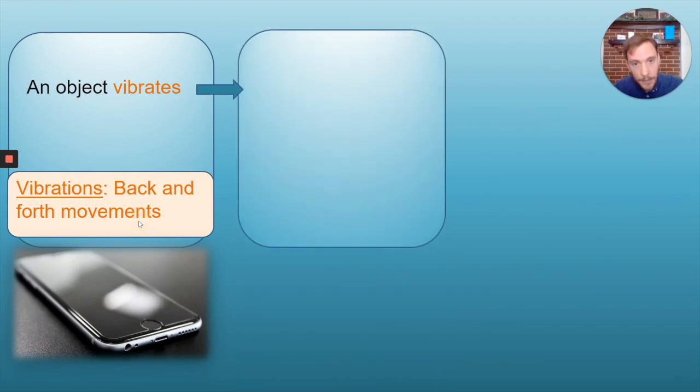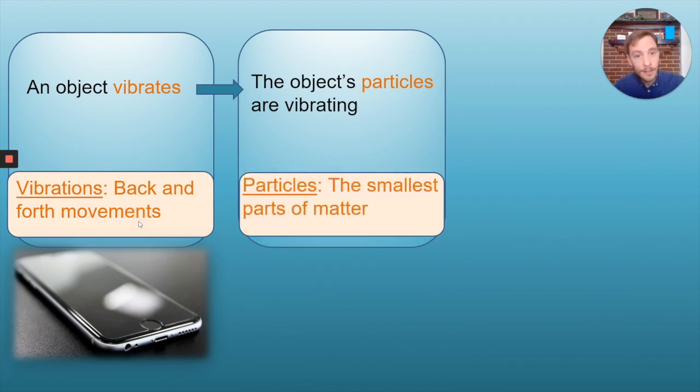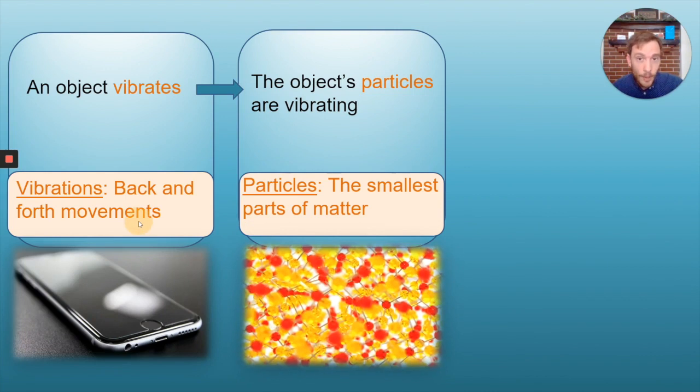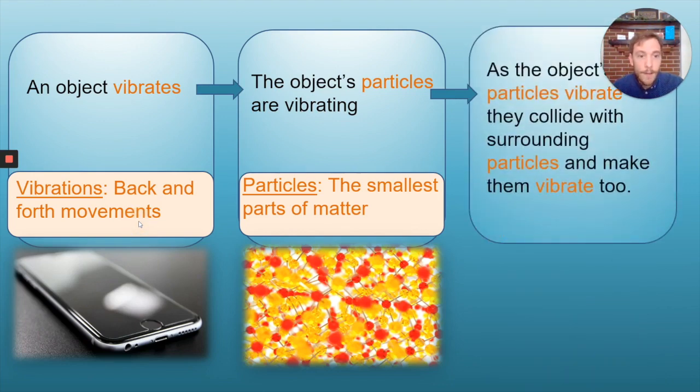It's important to know that when this happens, the object's particles are vibrating too. Now particles are the smallest parts of matter. So when you get a text message on your phone and your phone vibrates, these small particles that make up the phone are vibrating too. And when this happens, when these particles are vibrating, they collide with surrounding particles and they make particles around the phone vibrate too.